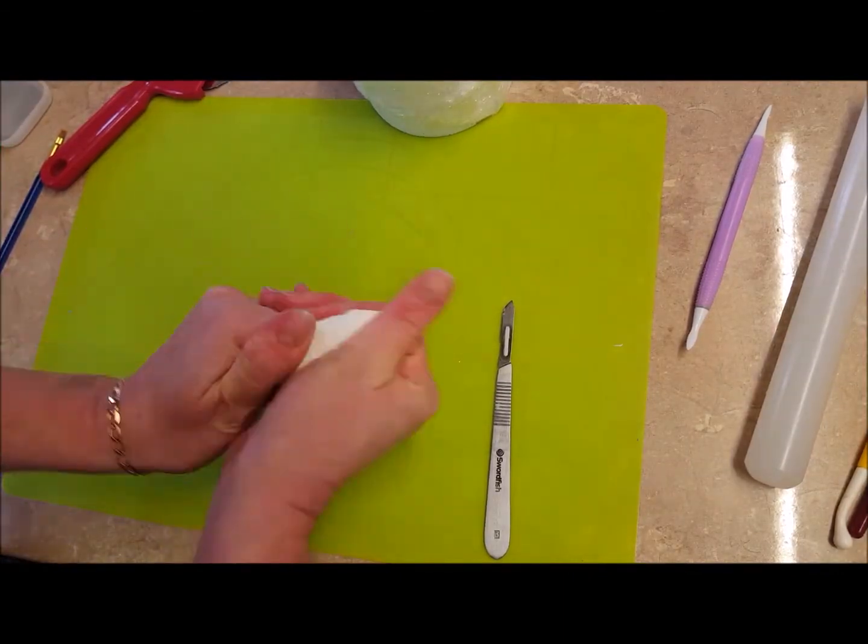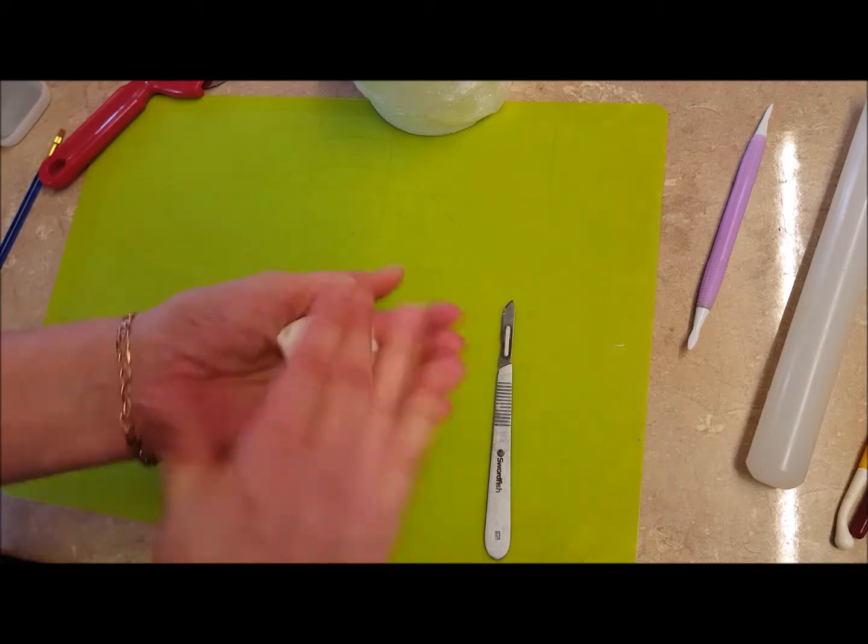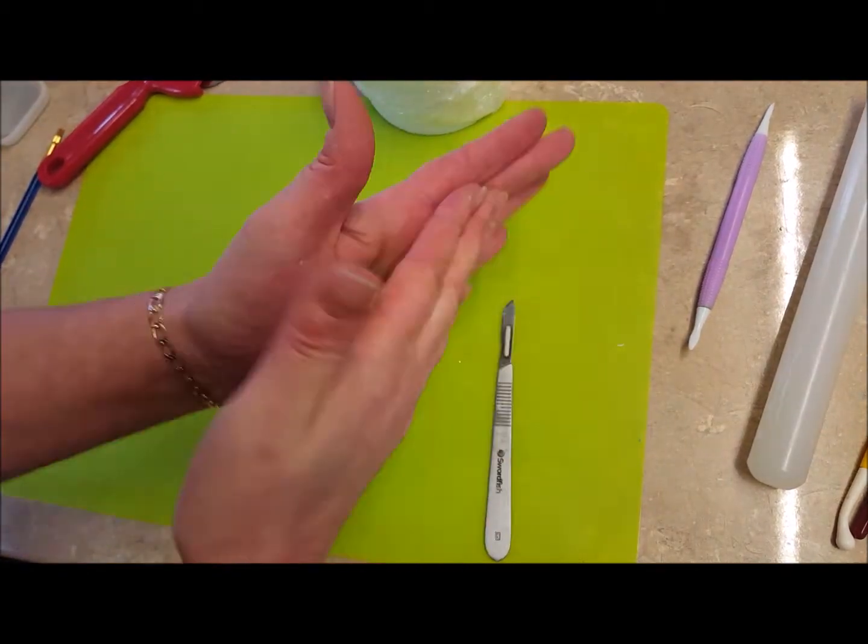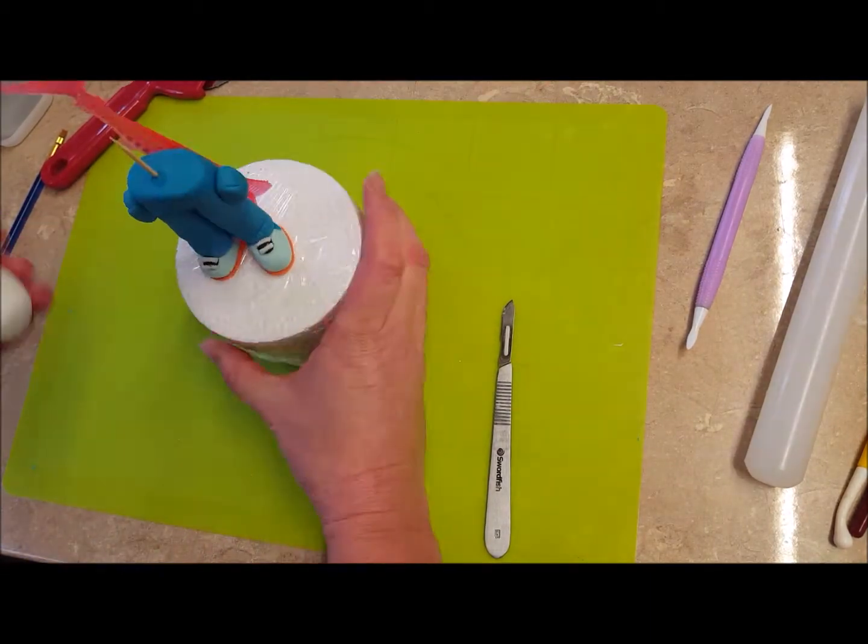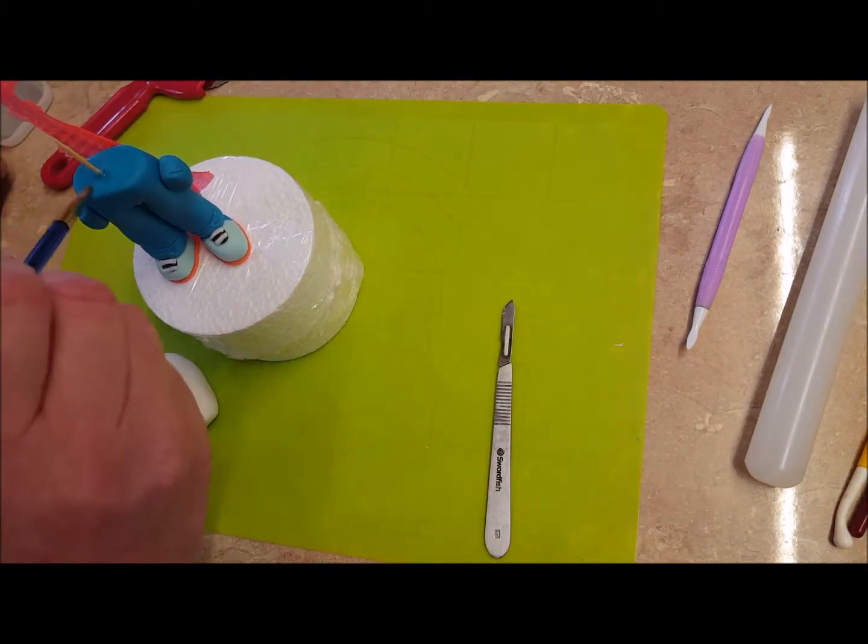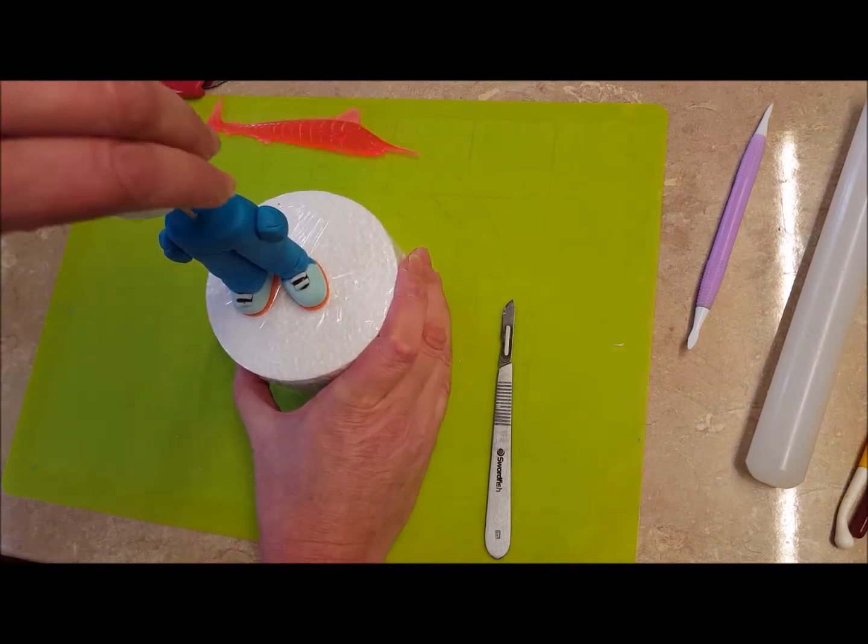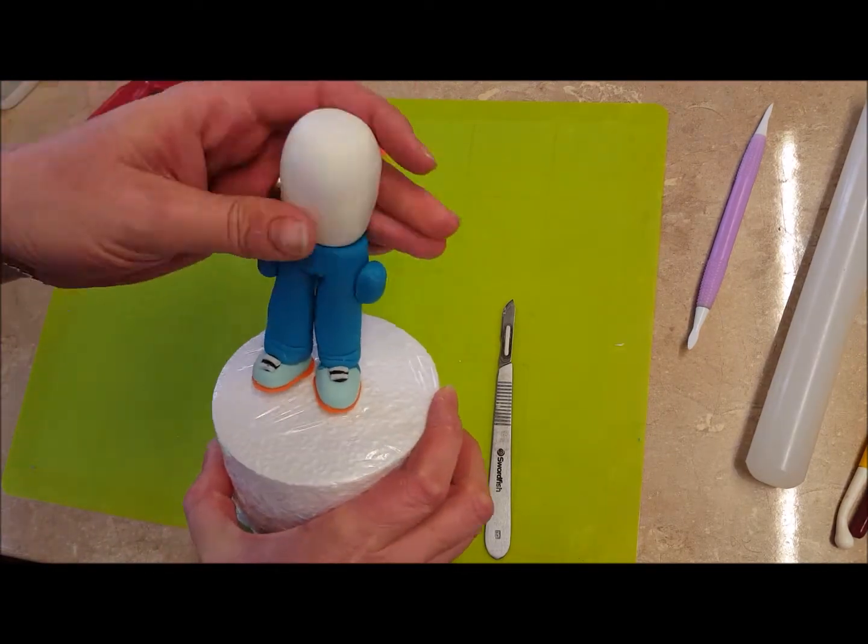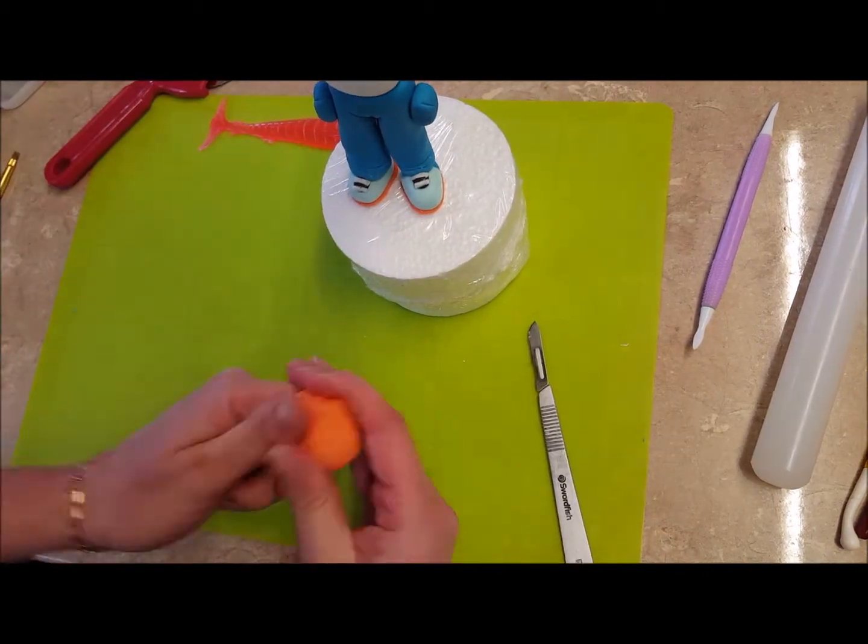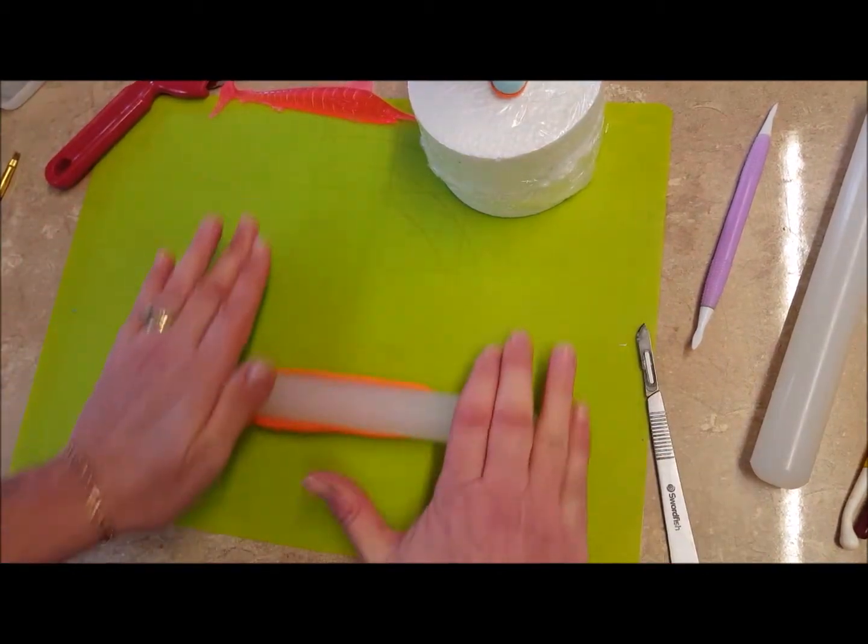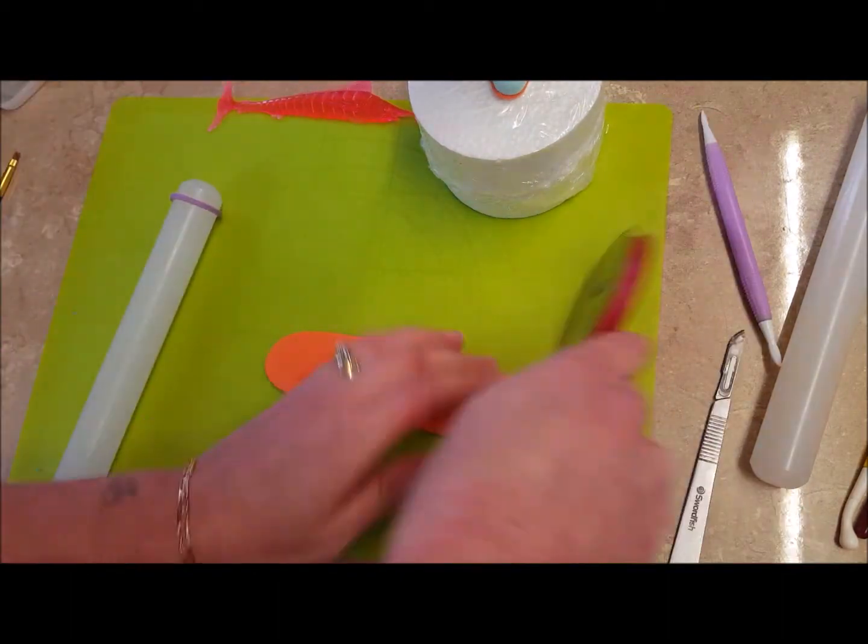This is the next day now. This is the torso. I've got 40 grams of gum paste here. It's narrow at the bottom and a bit thicker at the top. And you've got your orange bit that goes around the side of him.